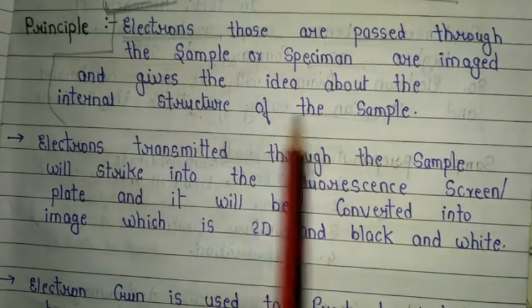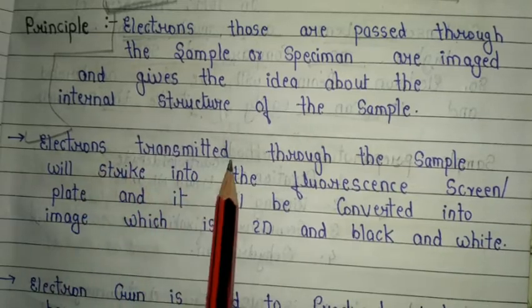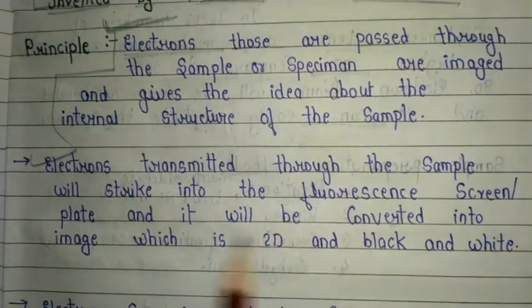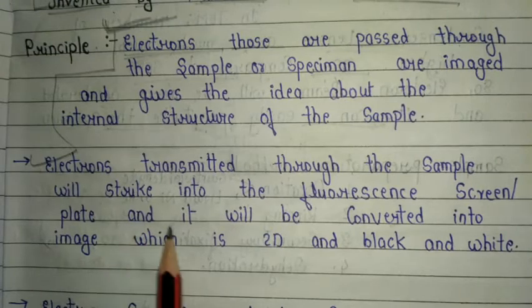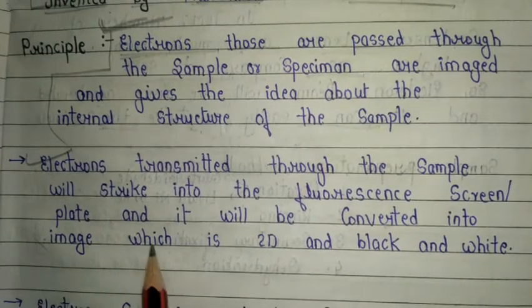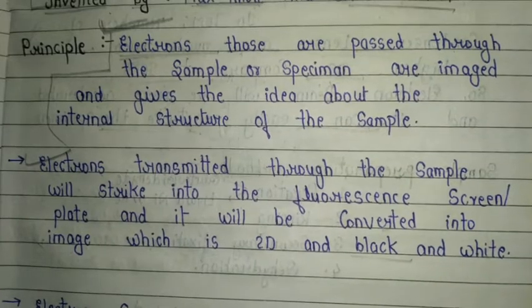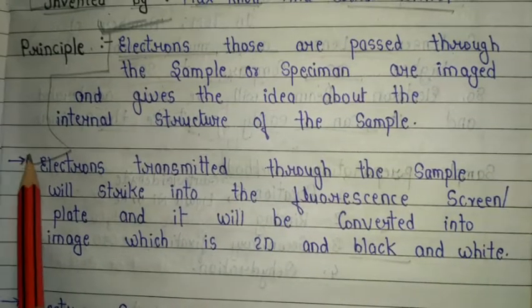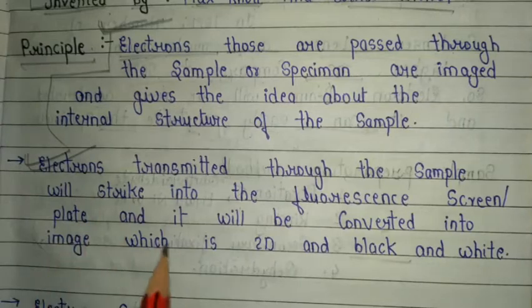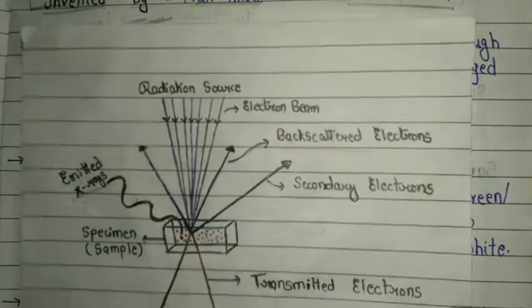The second important principle point: electrons transmitted through the sample will strike a fluorescence screen or plate and will be converted into an image which is 2D and black and white. This is the key theory point of the TEM principle.